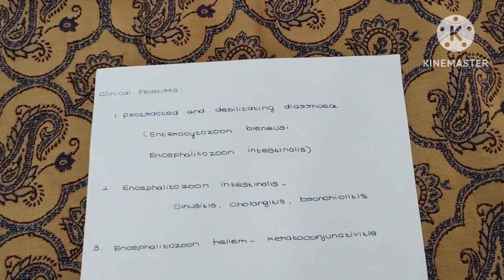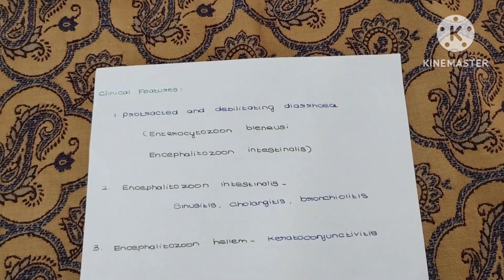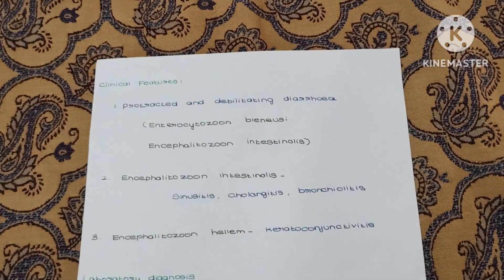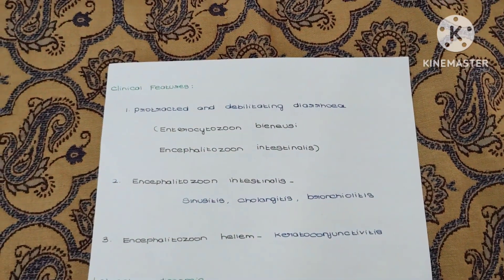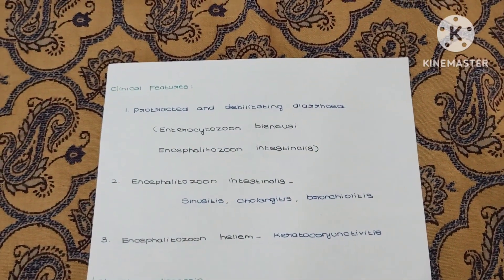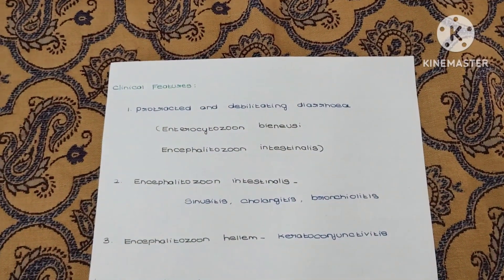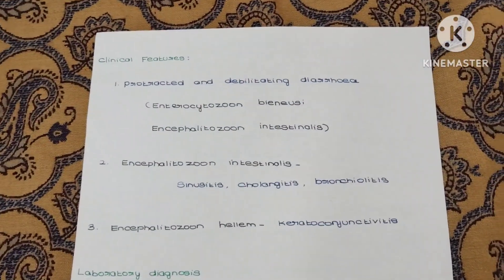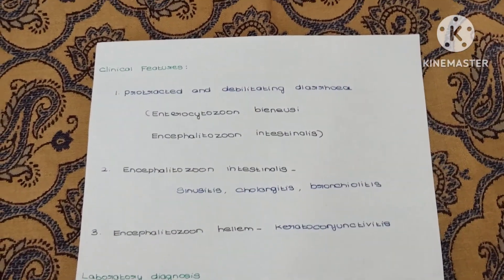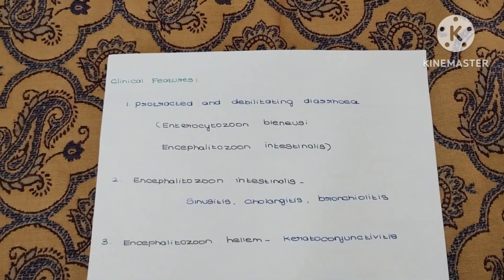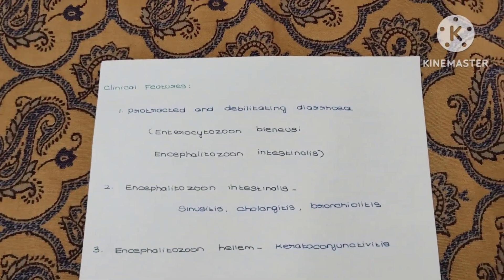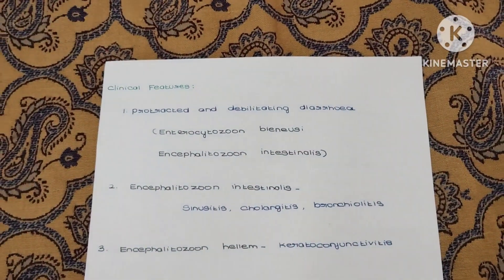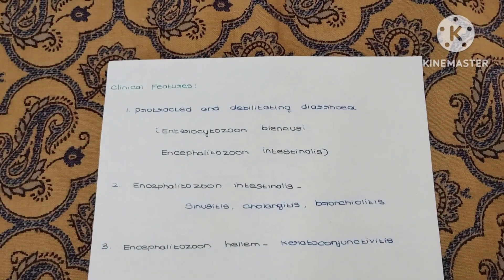Encephalitozoon intestinalis causes sinusitis, colitis, and bronchiolitis. Encephalitozoon hellem usually causes keratoconjunctivitis. Just remember these common species which typically affect humans.